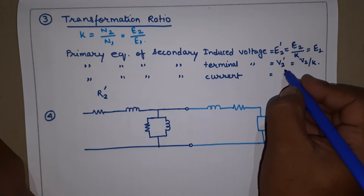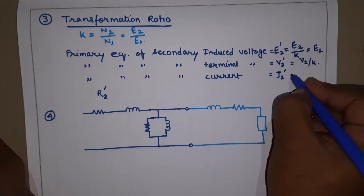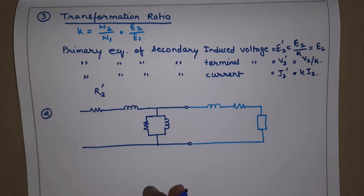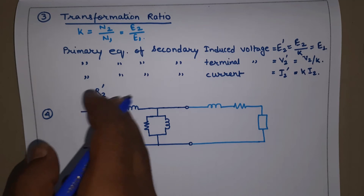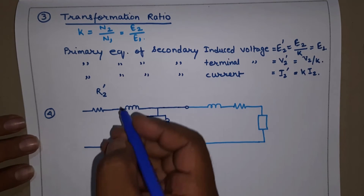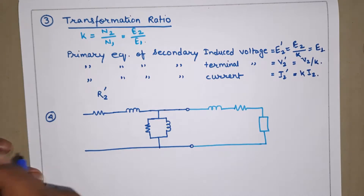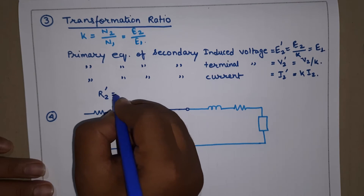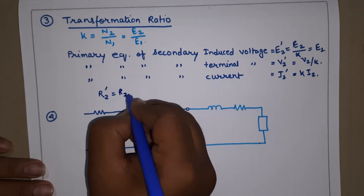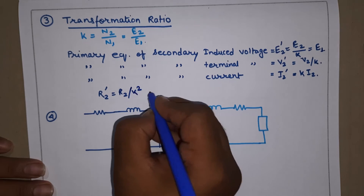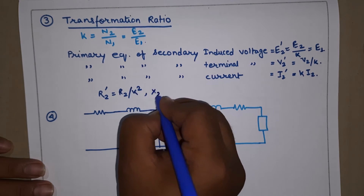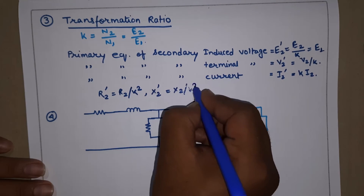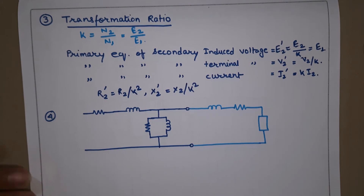The primary equivalent of secondary current is i2-dash, equal to k times i2. For the primary equivalent of secondary resistance, r2-dash equals r2 divided by k-squared, and x2-dash equals x2 divided by k-squared.